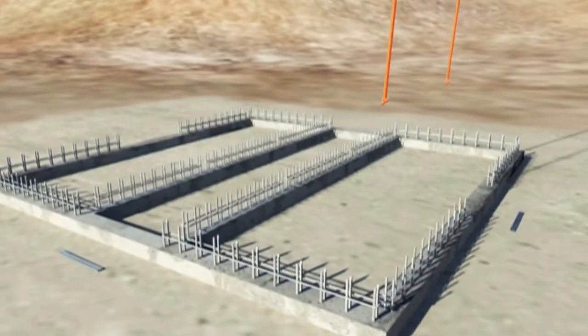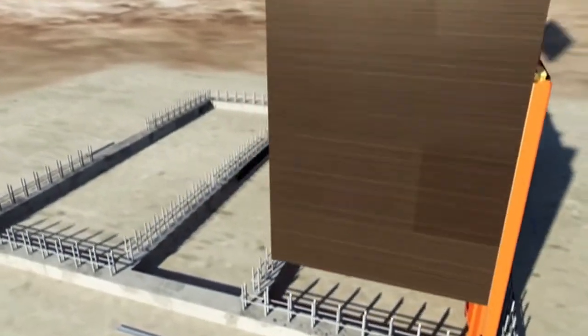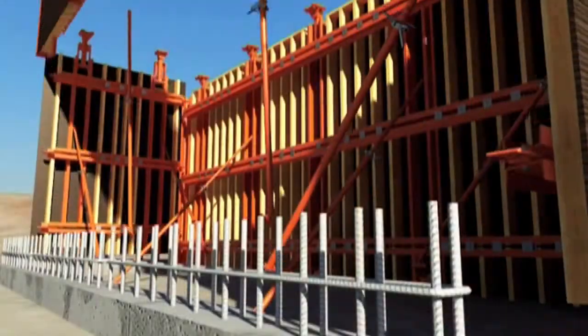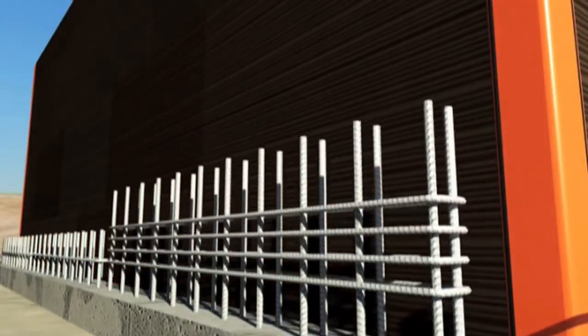How does TruLift work? Prefabricated inner formwork panels and corners are crane-handled into position and braced with props.